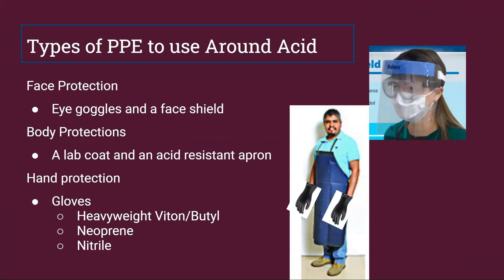But how can we avoid that even happening in the first place? Well, that's where PPE comes in. When it comes to face protection, you wear your eye goggles and face shield — you don't want that getting corroded. And for your body, make sure to have a lab coat and an acid-resistant apron like this gentleman has. And gloves — just get some heavy-duty stuff. Make sure those stay safe.